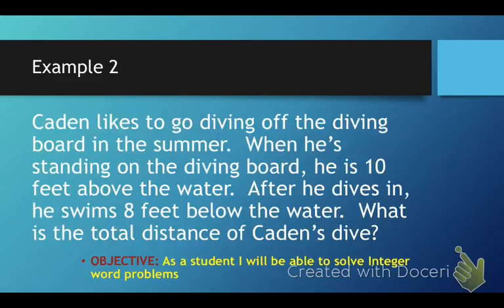Let's go on to number 2. Number 2, Caden likes to go diving off the diving board in the summer. When he's standing on the diving board, he is 10 feet above the water. After he dives in, he swims 8 feet below the water. What is the total distance of Caden's dive? So, for this type of problem, we have to realize that he is going above and below the water.